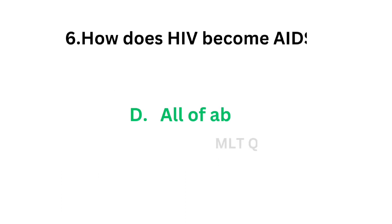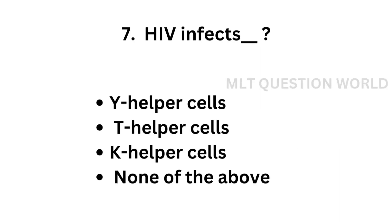The correct answer is option D, all of the above. HIV attacks T cells, then makes multiple copies of itself, and then destroys the cells of the body.